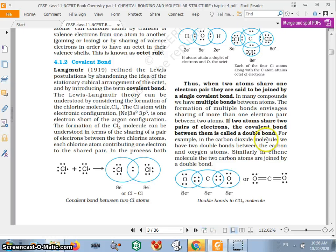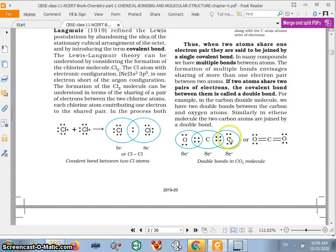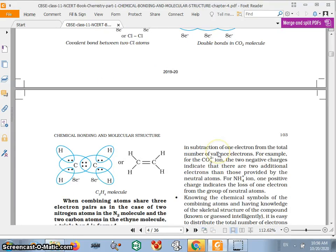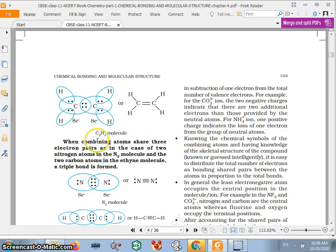And in many compounds we have multiple bonds. If two atoms share two pairs of electrons, the covalent bond between them is called a double bond. This is the example where double bond you can see in carbon dioxide, and this is a linear molecule. You can see in C2H4 molecule hydrogen, hydrogen forming due to.